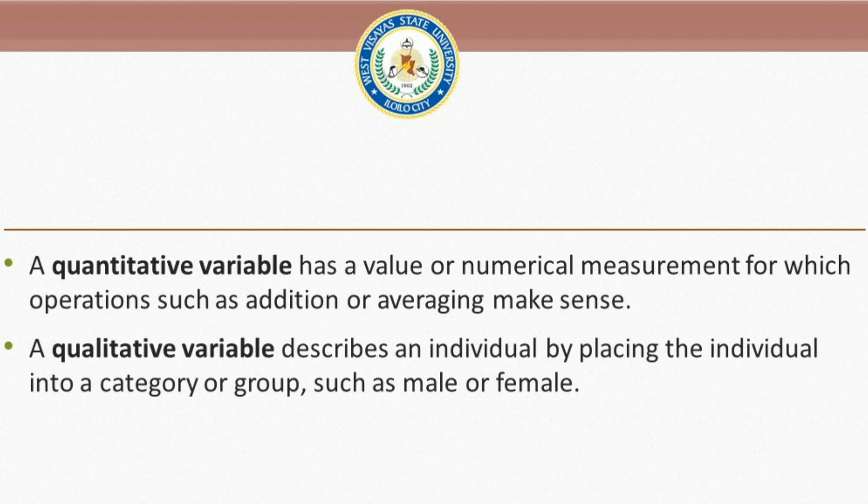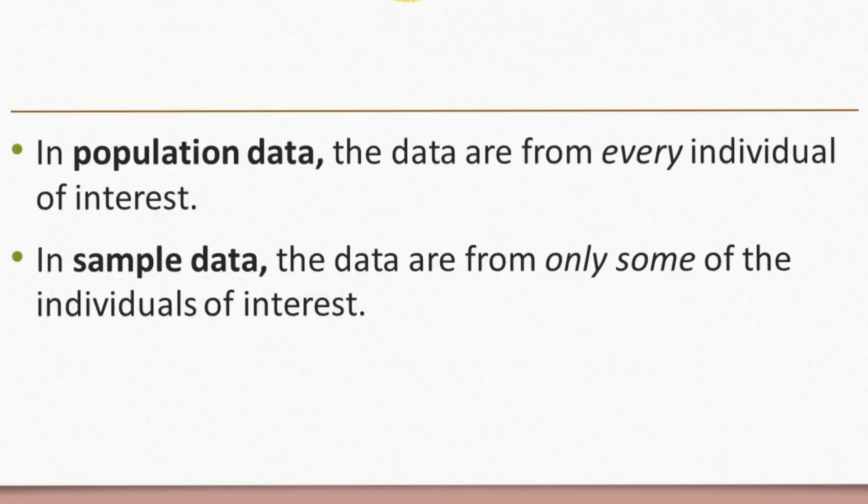A qualitative variable, on the other hand, describes an individual by placing the individual into a category or group such as male or female. Hence, we say that sex is a qualitative variable. Color is also a qualitative variable — we can have pink, blue, and white as categories for the variable color.